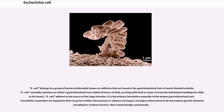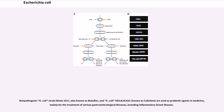E. coli belongs to a group of bacteria informally known as coliforms that are found in the gastrointestinal tract of warm-blooded animals. E. coli normally colonizes an infant's gastrointestinal tract within 40 hours of birth, arriving with food or water or from individuals handling the child. In the bowel, E. coli adheres to the mucus of the large intestine. It is the primary facultative anaerobe of the human gastrointestinal tract. As long as these bacteria do not acquire genetic elements coding for virulence factors, they remain benign commensals. Non-pathogenic E. coli strain Nissle 1917, also known as Mutaflor, and E. coli O83:K24:H31 are used as probiotic agents in medicine, mainly for the treatment of various gastroenterological diseases, including inflammatory bowel disease.